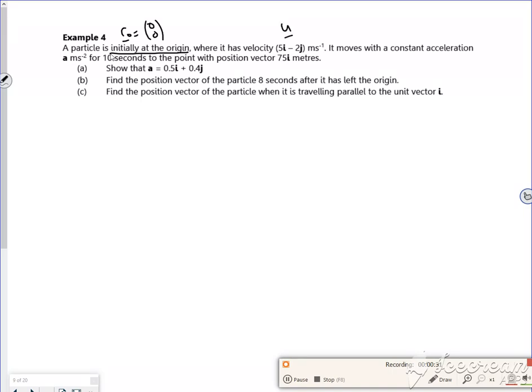It moves from the constant acceleration of a for 10 seconds to the point where the position vector is 75i. So my r or my s is 75, 0, depending on what you want to use. So if I was being really picky I'd use the r0 but I'm not going to bother because it's 0. So if I switch the s into an r, because I'm talking about the position vector.